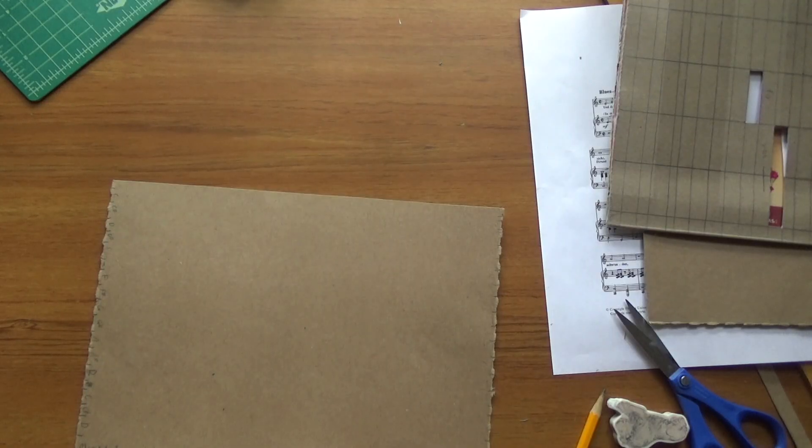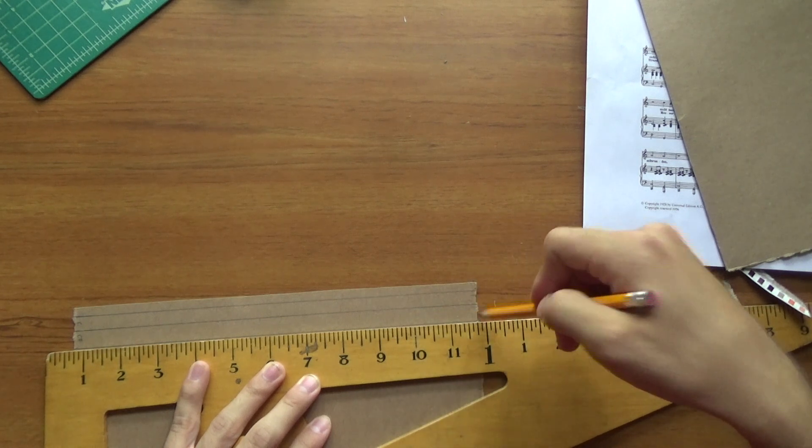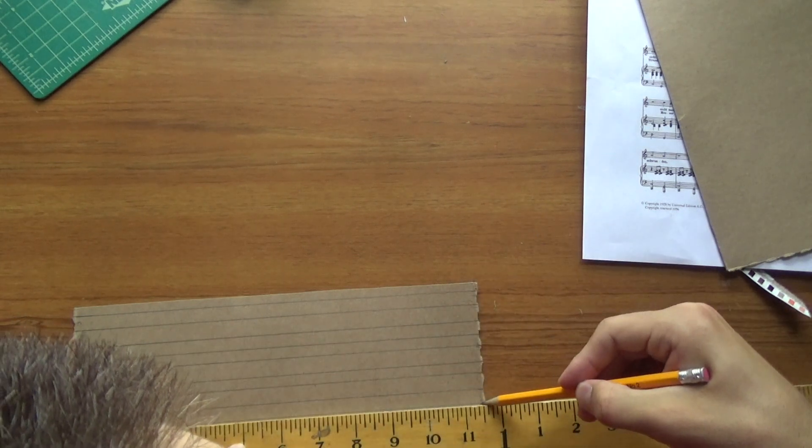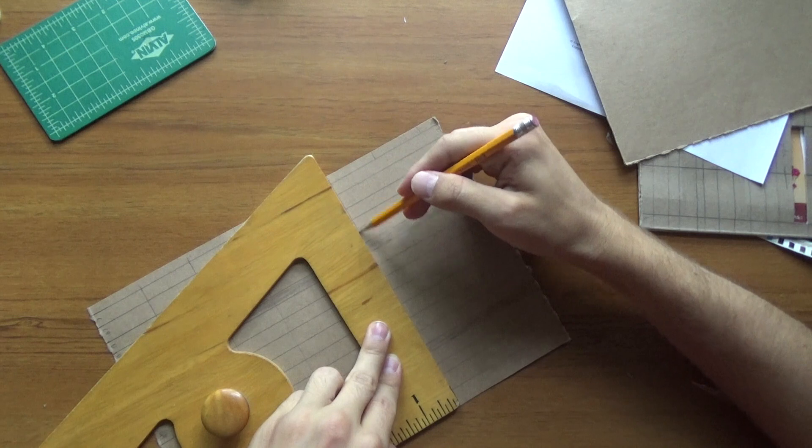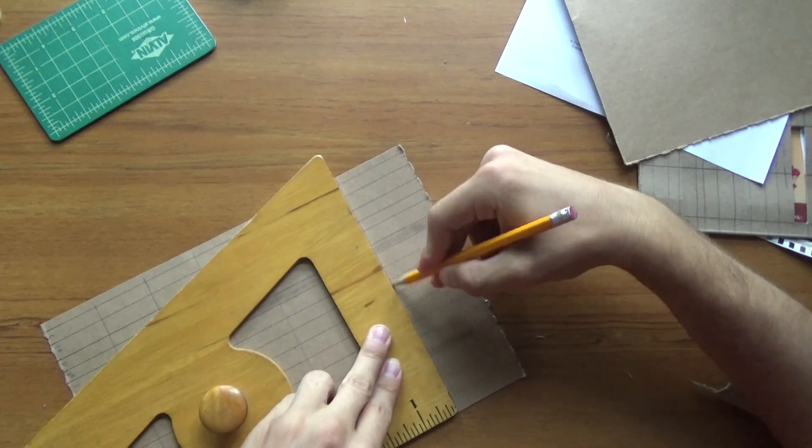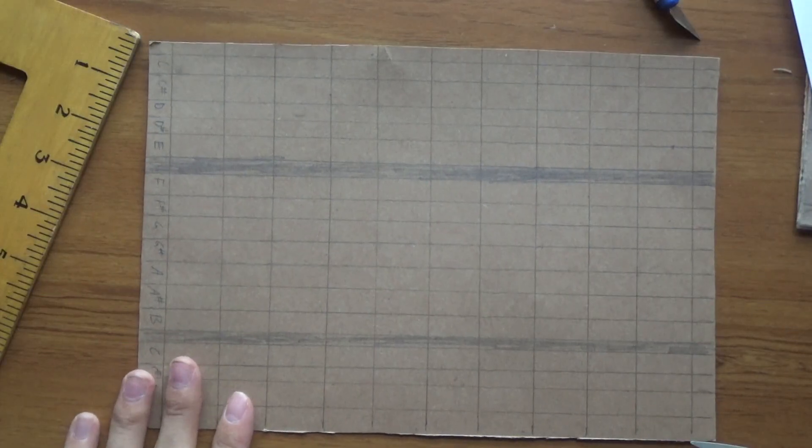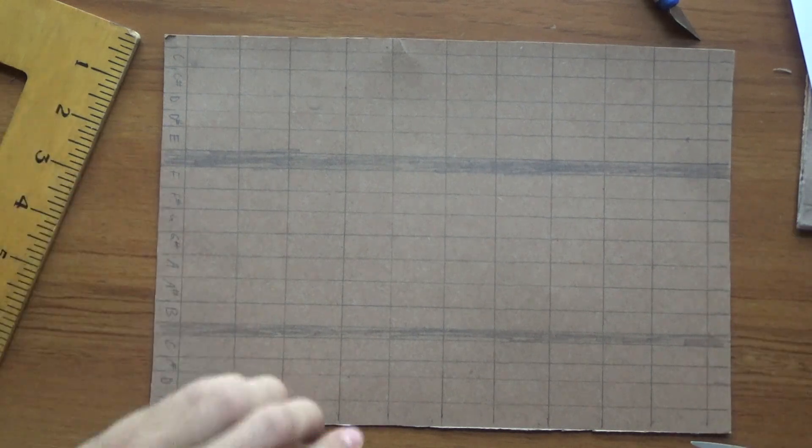Then I draw lines showing where the different notes are located on the machine, as well as regularly spaced lines representing each beat. Then I mark off which notes get played on which beat.